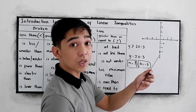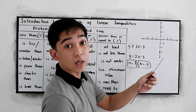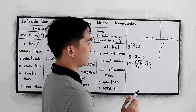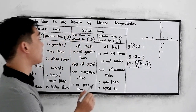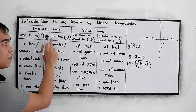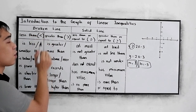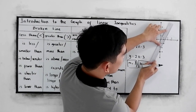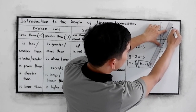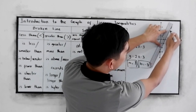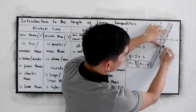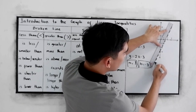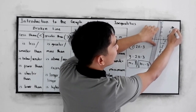Now, since we have the greater than symbol, and for the broken line we use greater than, we need to use a broken line. That means this line is not included. This will be our broken line.